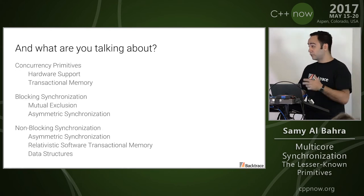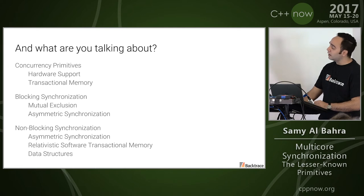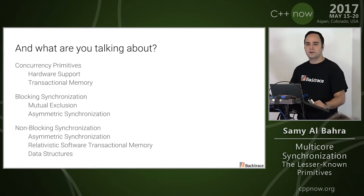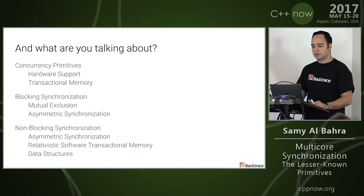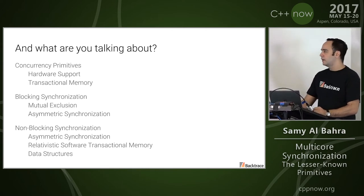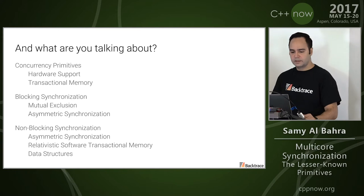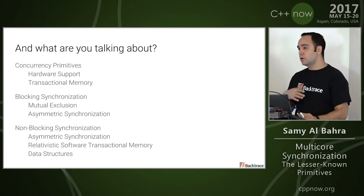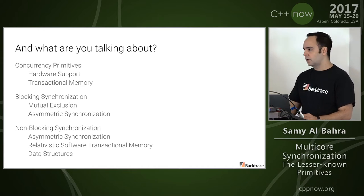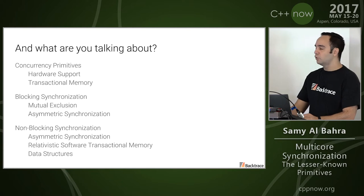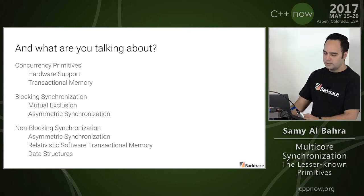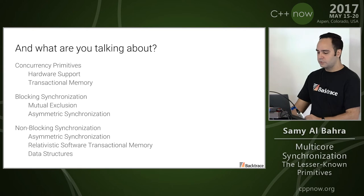So what are we going to cover? First, we're going to start with, I'd argue, a bit more boring stuff. We'll start with very basic concurrency primitives — atomic operations and various other hardware support for concurrent and parallel applications on multi-core. Then we'll be covering blocking synchronization, which is what most folks are familiar with — your typical mutex, read-write-lock, condition variable, etc. Then we'll be covering more interesting synchronization primitives, including lock-free data structures.